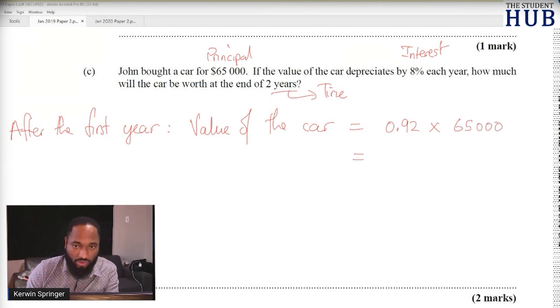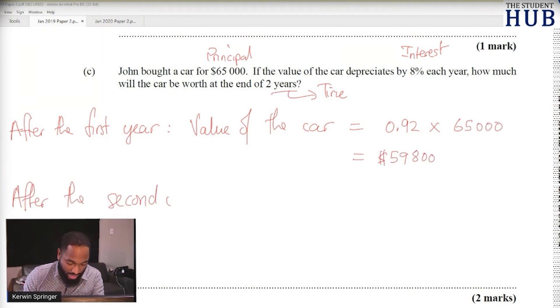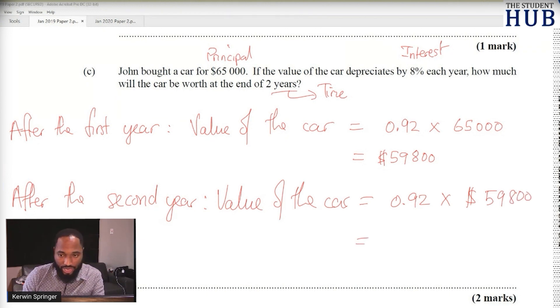After the second year, the value of the car will go down an additional 8%, meaning you'll get 0.92 of the next value here. So this is the short way to work out: 0.92 of $59,800 gives us $55,016.